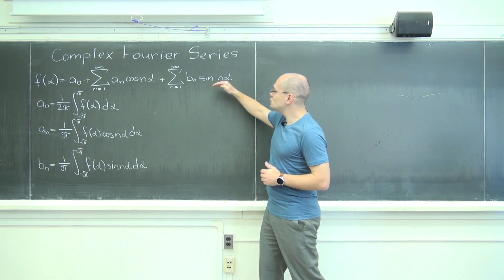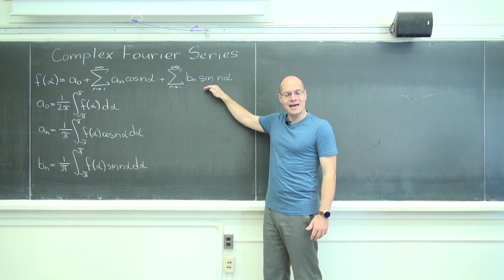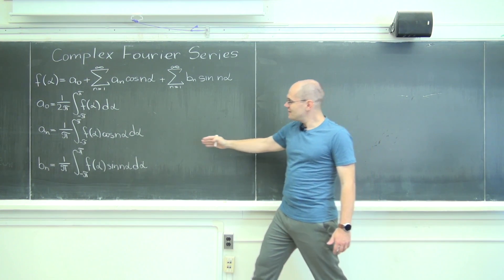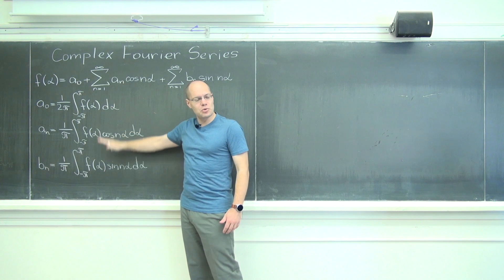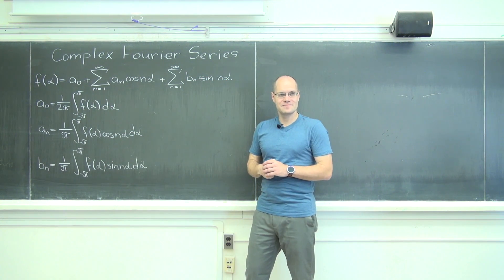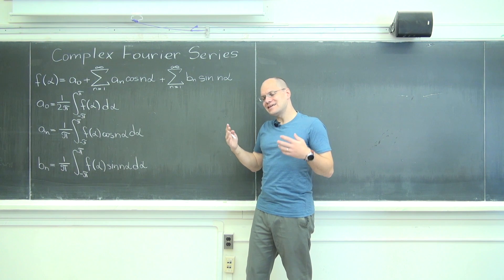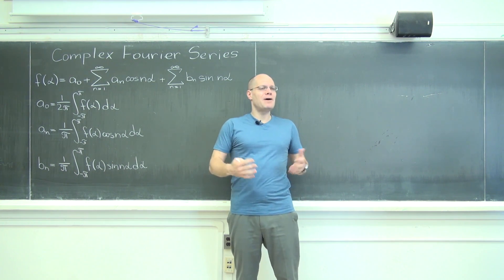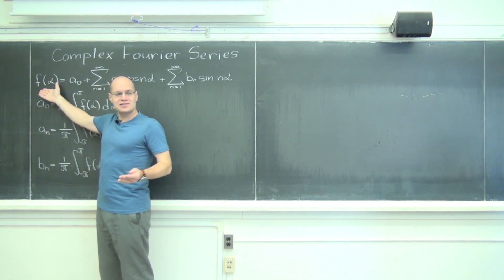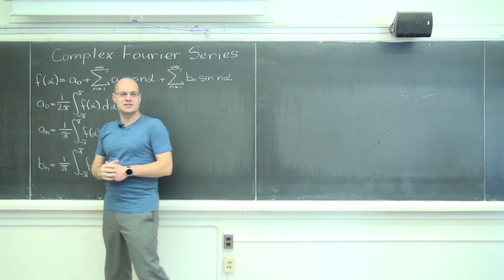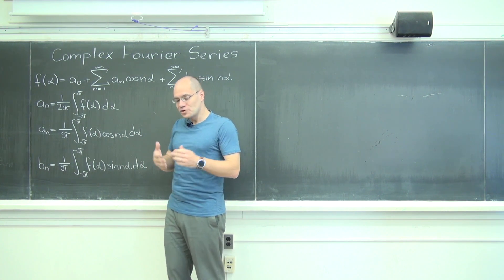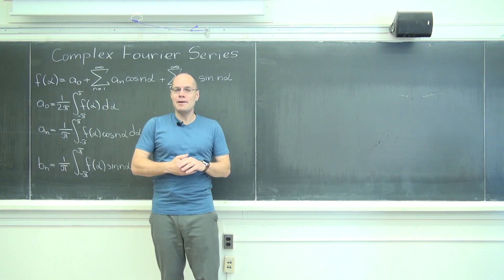Instead of being unsatisfying it will actually be deeply satisfying. Let's see what the Fourier series will look like—the formula and the coefficients, the series itself and the coefficients—if instead of dealing with trigonometric functions, we dealt with equivalent complex exponentials.